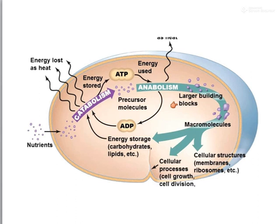Nutrients are broken down by the process of catabolism and they get energy from that. At the same time, this energy is used and they will do the process of anabolism, or the building up of biological molecules. Macro elements are being used and cellular processes do happen within the body. So the process of nutrient uptake and energy generation has been found to be linked together within a microorganism.